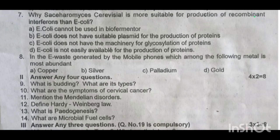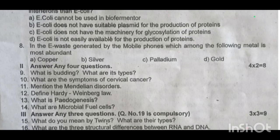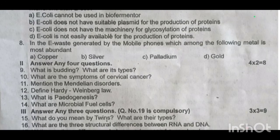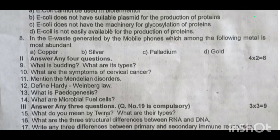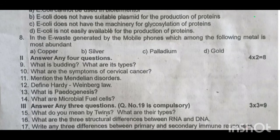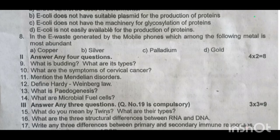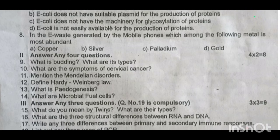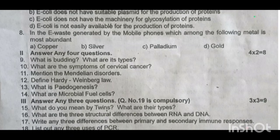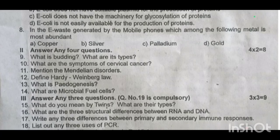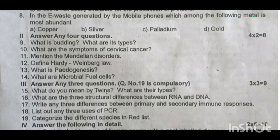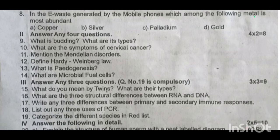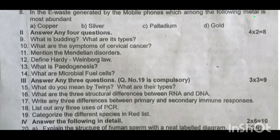Three-mark questions — compulsory. Fifteenth one, what do you mean by twins? What are the types? Sixteenth one, what are the three structural differences between RNA and DNA? Seventeenth one, write any three differences between primary and secondary immune responses. Eighteenth one, list out any three uses of PCR. Nineteenth one, categorize the different species in the Red List.